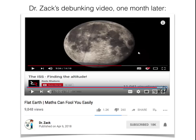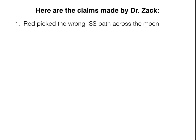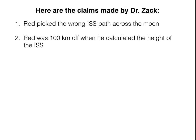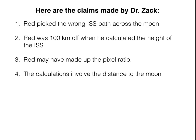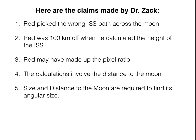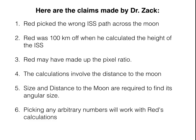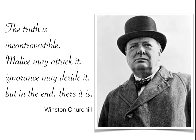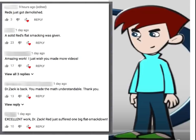Here's the still from Red's video showing two passes of the ISS past the moon. And Dr. Zack, here's your still from your debunking one month later. It looks like you made about six claims: one is that Red had picked the wrong ISS path across the moon — he was a hundred kilometers off; he may have made up the pixel ratio; calculations should involve the distance to the moon; the size and distance of the moon are required to find its angular size; and a big claim was that picking any arbitrary numbers will work with the same calculations. Before we begin, I want to cover this quote from Winston Churchill: 'The truth is incontrovertible. Malice may attack it, ignorance may deride it, but in the end, there it is.'